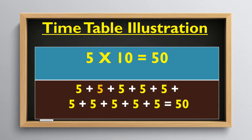5 times 10 is equal to 50. So, 5 plus 5 plus 5 plus 5 plus 5 plus 5 plus 5 plus 5 plus 5 plus 5 equals 50.